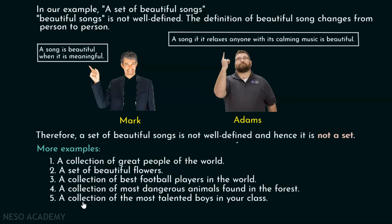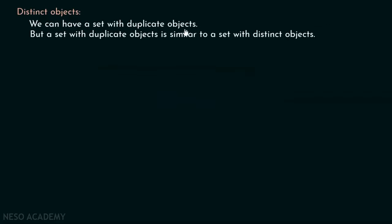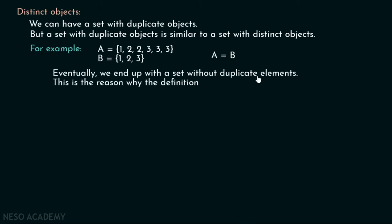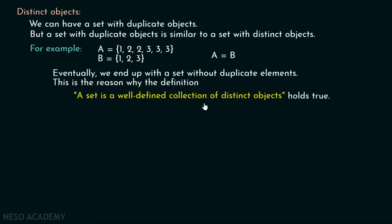After understanding the meaning of well-defined and object, we will now understand the meaning of distinct objects. We can have a set with duplicate objects, but a set with duplicate objects is similar to a set with distinct objects. For example, set A = {1, 2, 2, 3, 3, 3} and set B = {1, 2, 3}. There is no difference between these two sets — A is actually equal to B. Even though A has 6 elements and B has 3, in a set, duplicate objects get eliminated. So writing duplicate elements is redundant, and a set with duplicate objects is similar to a set with distinct objects. This is the reason why the definition holds true: a set is a well-defined collection of distinct objects.